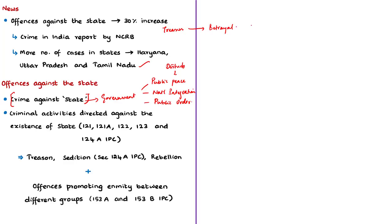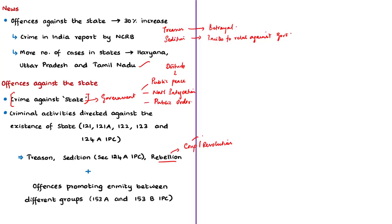Sedition generally refers to conduct or speech that incites or encourages people to rebel against the authority of a state or government. Rebellion means the attempted overthrow of a government, and if this rebellion succeeds it is called a coup or revolution. The term coup means the sudden, violent, and illegal seizure of power from a government.